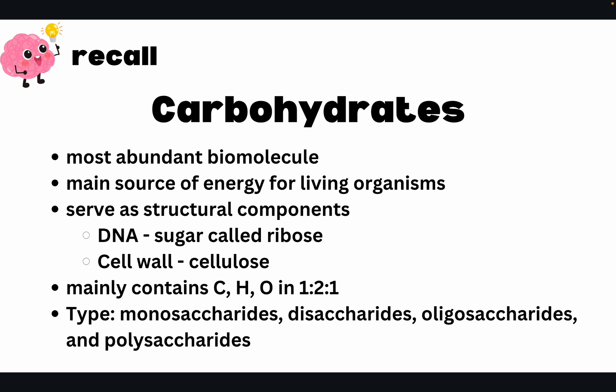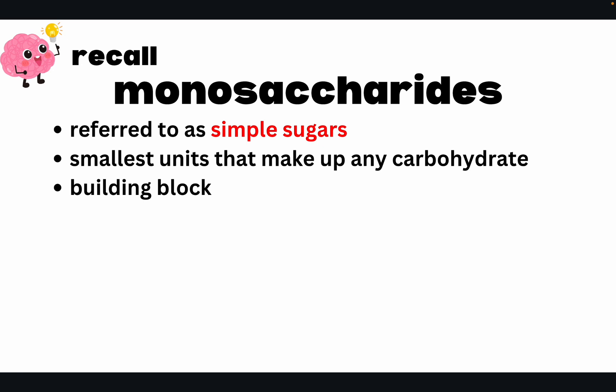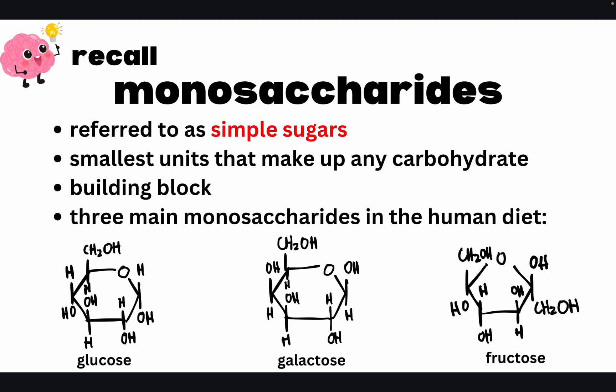We have many types of carbohydrates: monosaccharides, disaccharides, oligosaccharides, and polysaccharides. Monosaccharides are referred to as simple sugars — they are the smallest units that make up any carbohydrate, which is why we call them the building blocks. In the human diet, you can see three monosaccharides: glucose, galactose, and fructose.